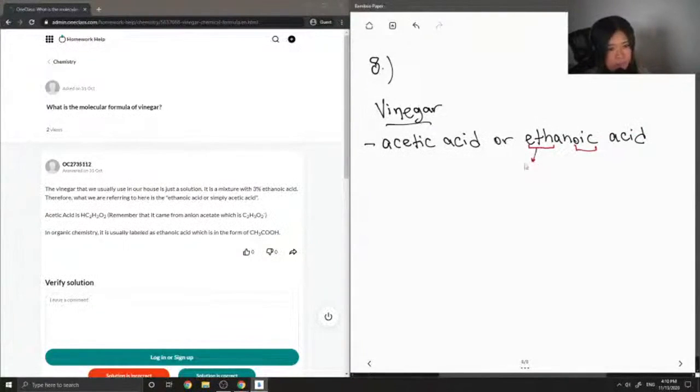So the fact that it has a prefix of eth means that its parent chain will contain two carbons.